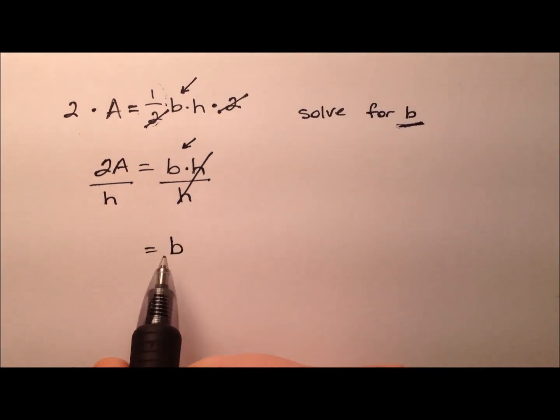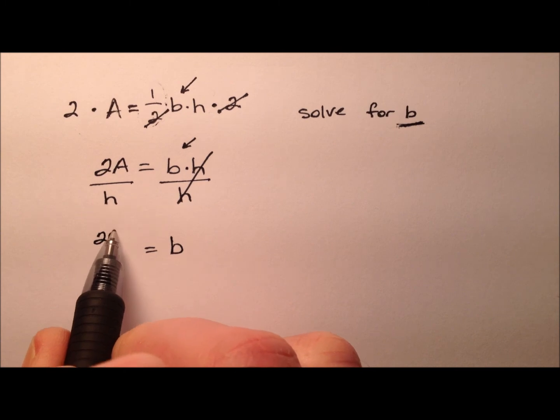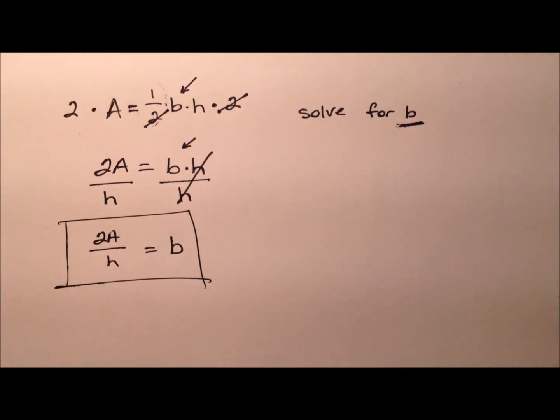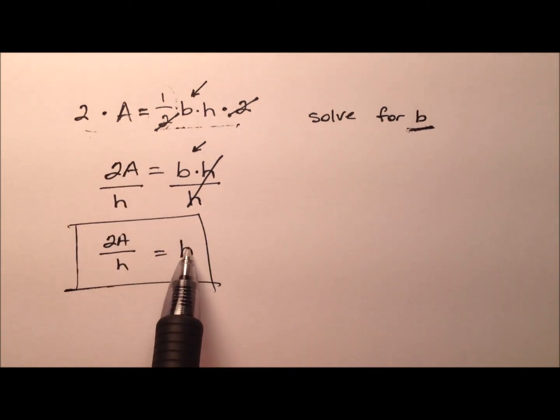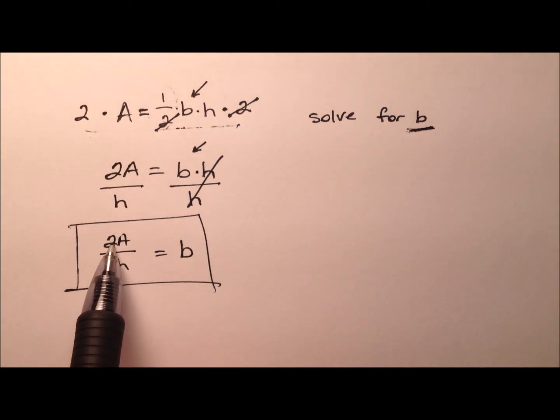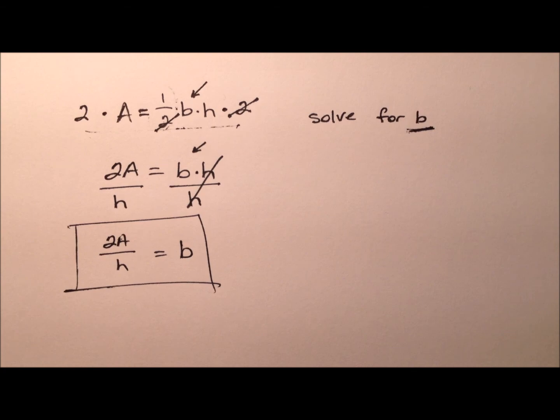And so I have b = 2A/h. So what you could say as far as a triangle is concerned, the base of a triangle is twice its area divided by its height.